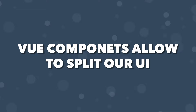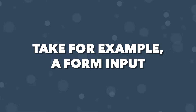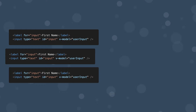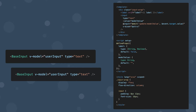View components allow us to split our UI into independent and reusable pieces. Take for example a form input — we might commonly use an input in various locations around our application. Instead of defining an input with all this markup multiple times, we can convert this logic into a component and then reuse it in various locations around our application.